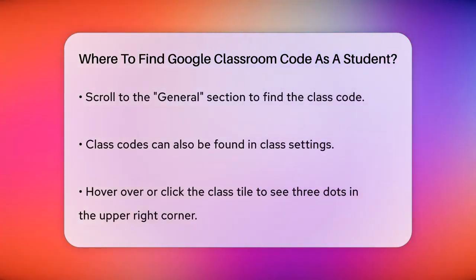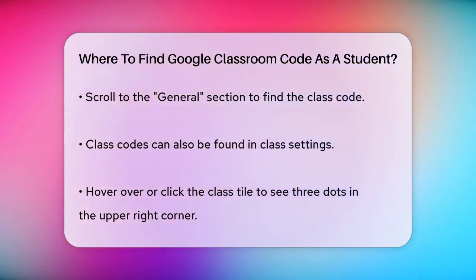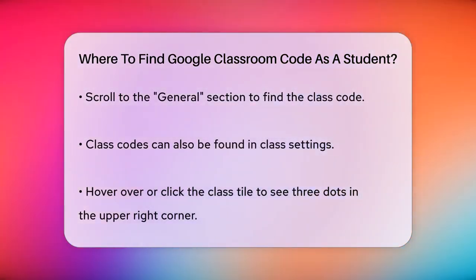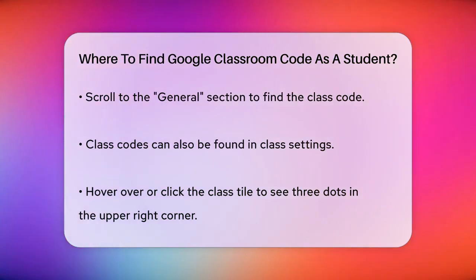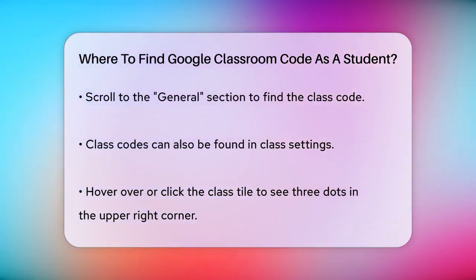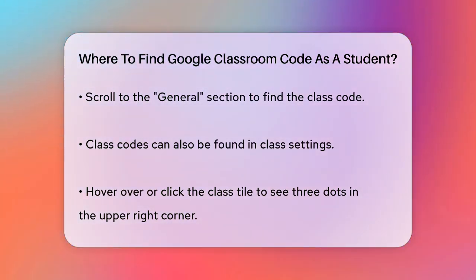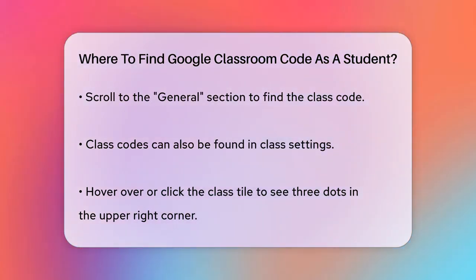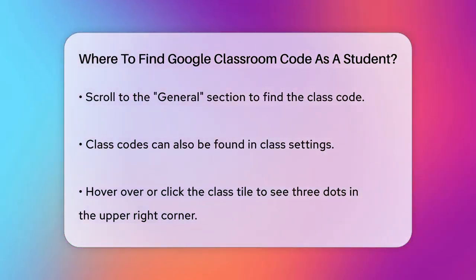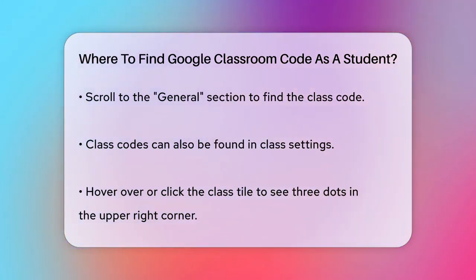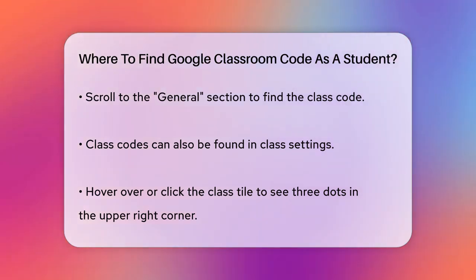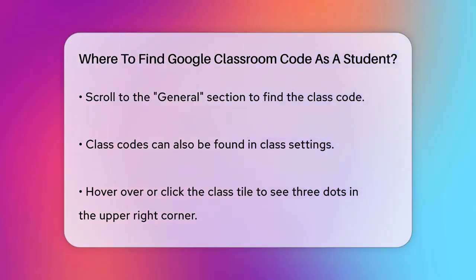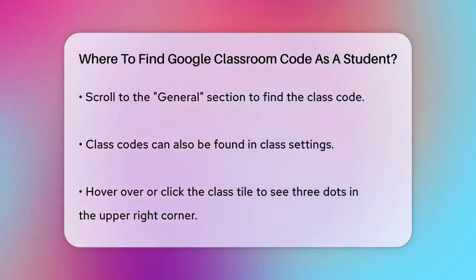Another way to find the class code is through the class settings. On the Google Classroom website or app, hover over or click on the class tile and look for the three dots in the upper right corner. Click on these dots to open the More Options menu, and you'll see an option to copy the class code or view it directly.